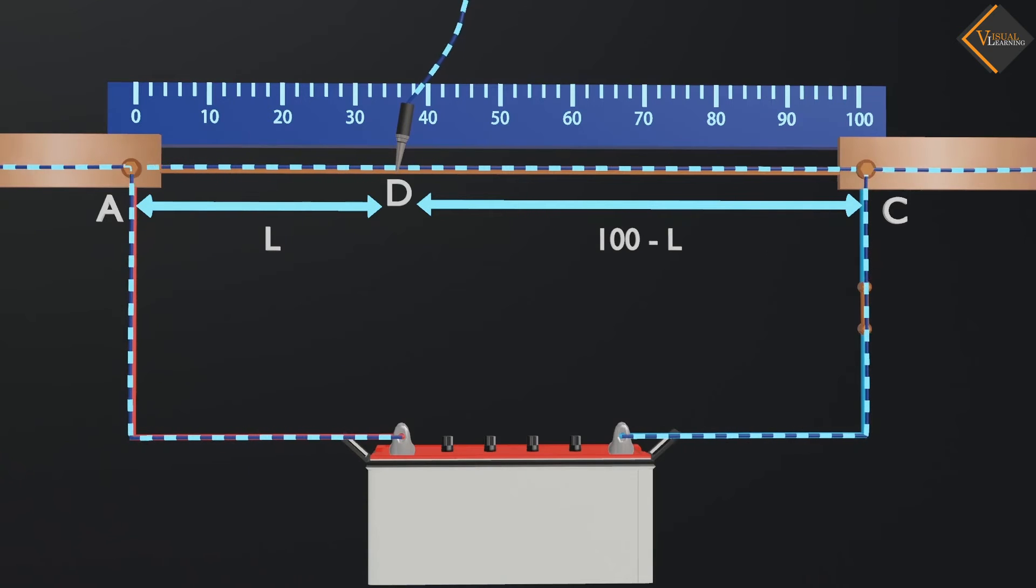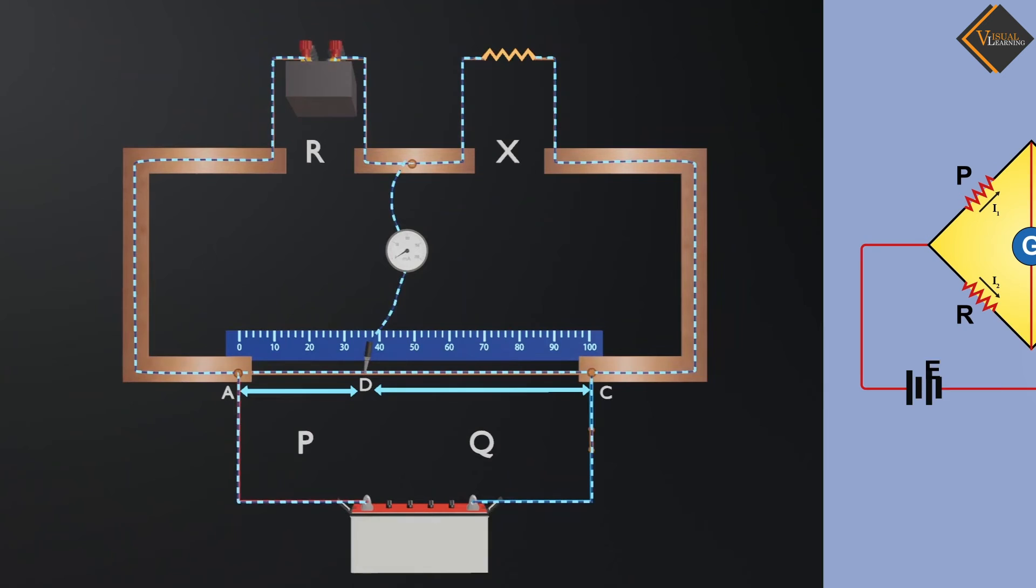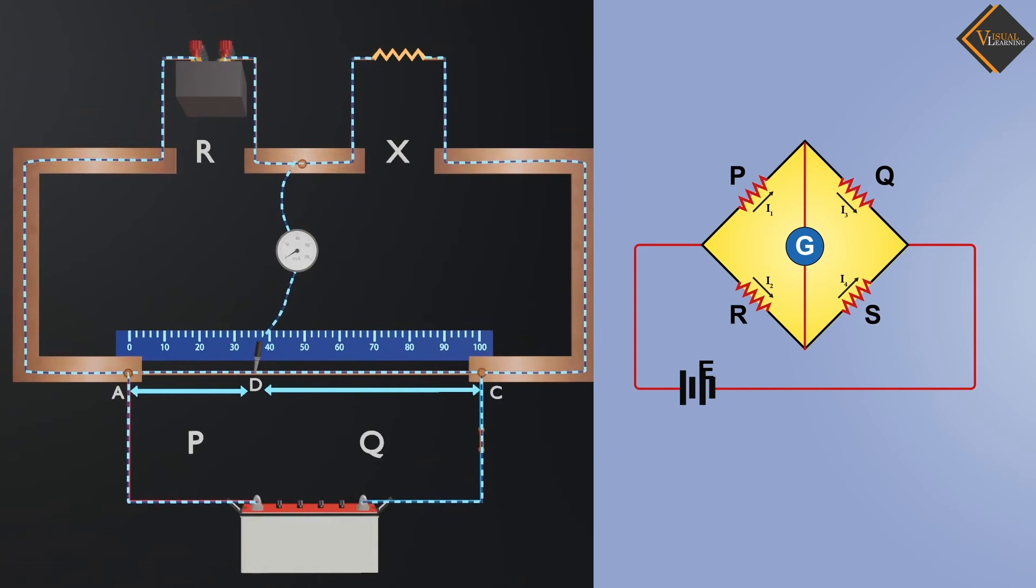We consider the resistance of the wire up to point A as P, and we consider the resistance of 100 minus L length as Q. Now, if we observe the entire circuit carefully, we find that this circuit is similar to the Wheatstone bridge.